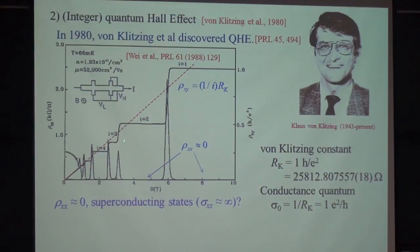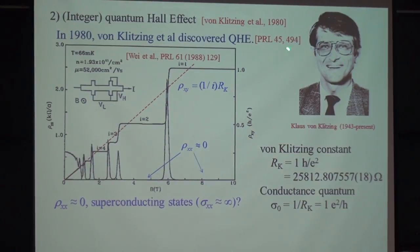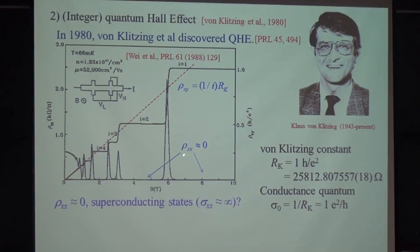That's 10 to minus 9. This is being used to measure fundamental constants like the fine structure constant. He also found that in this plateau area, the resistance would be zero. This is the amazing phenomenon now known as the integer quantum Hall effect.